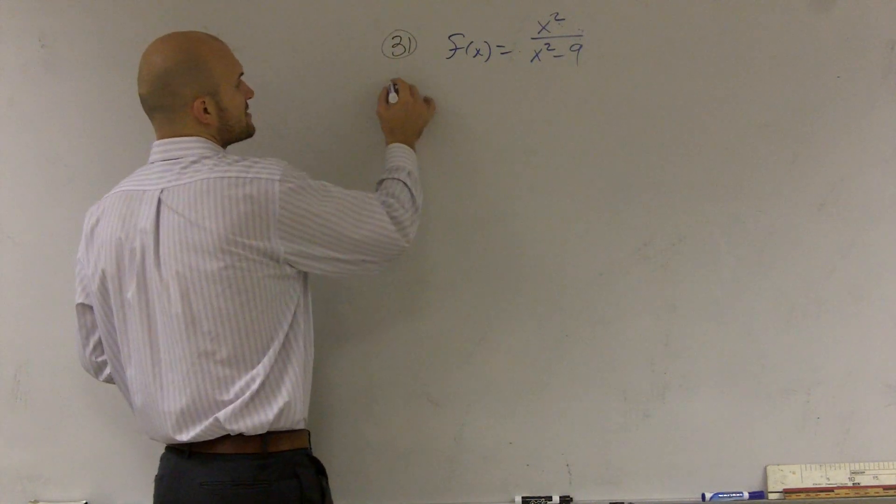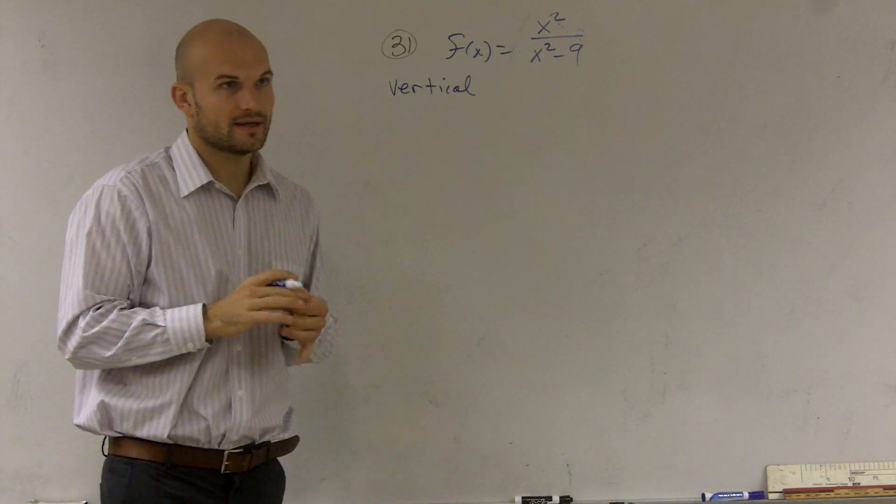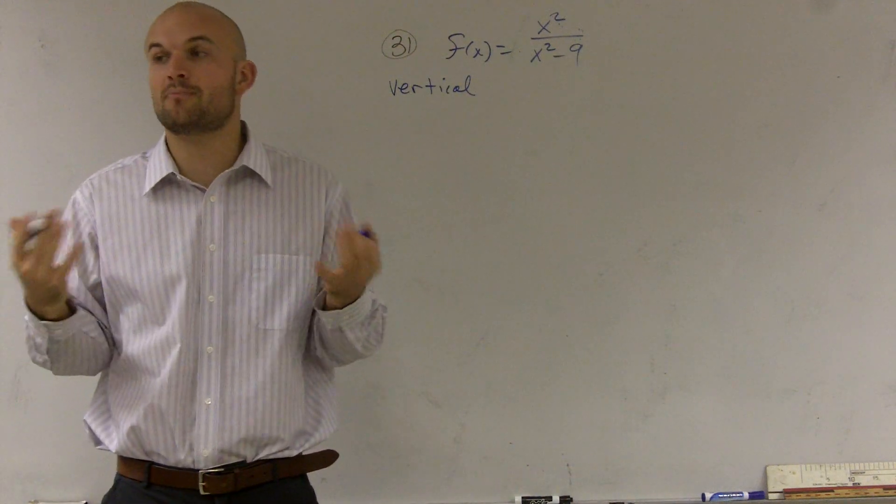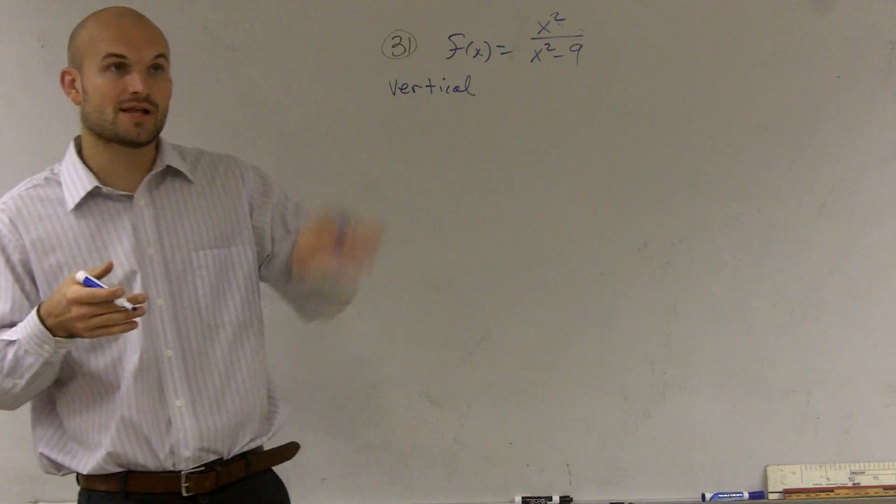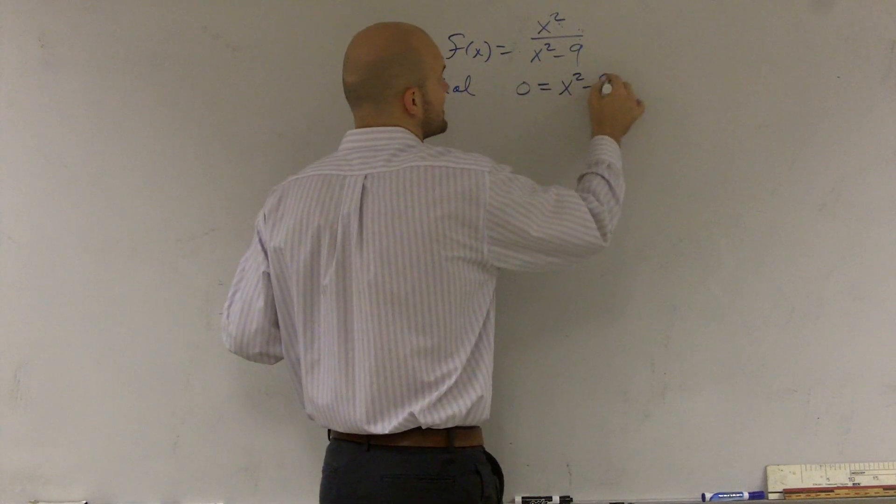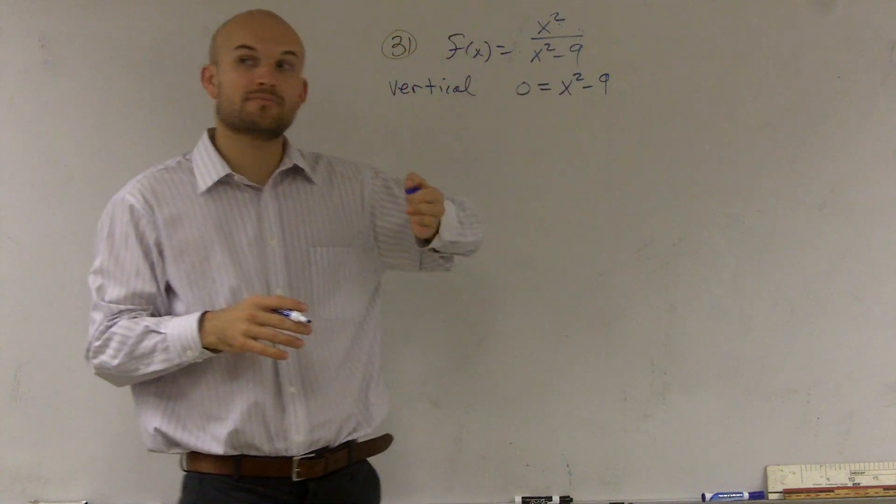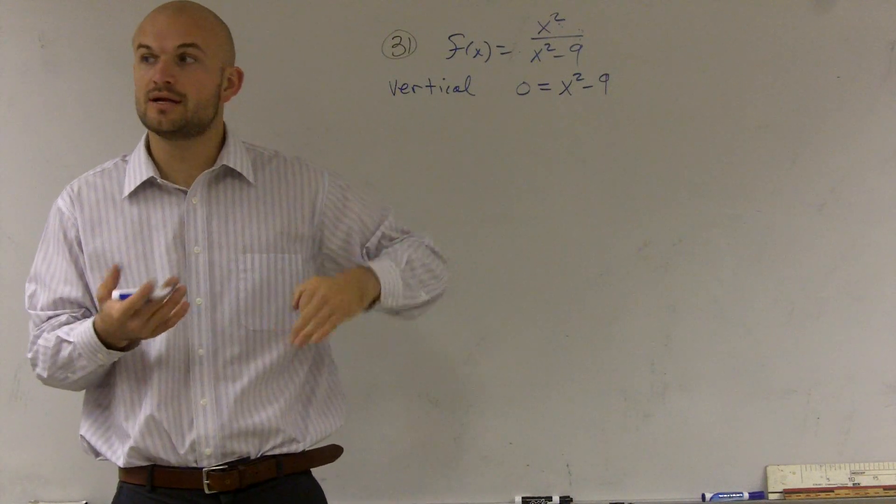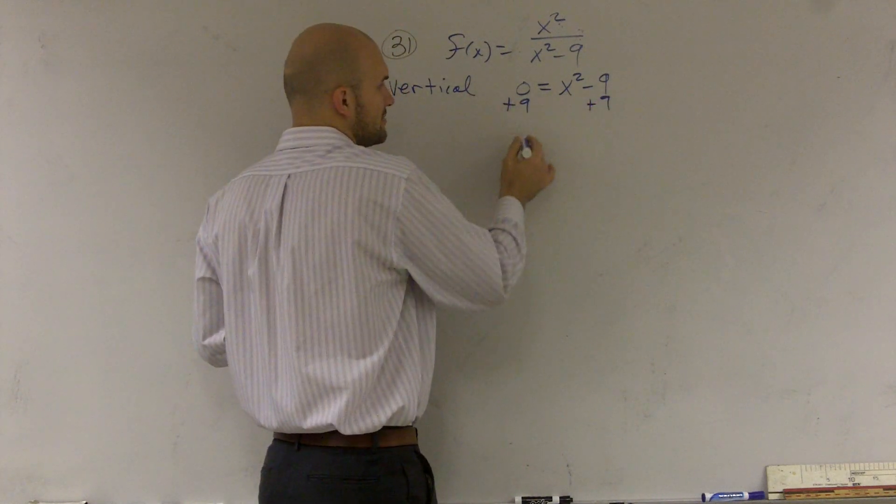So first thing you want to do is I always like to start with the vertical asymptote. Remember, the vertical asymptote is telling us our line where our bottom of our function is going to equal zero, because it's zeros of our function. Because vertical asymptote is not a part of our domain.